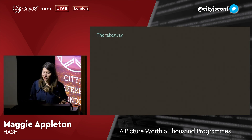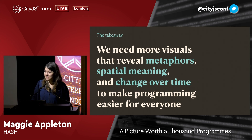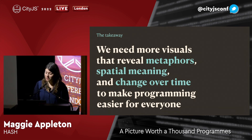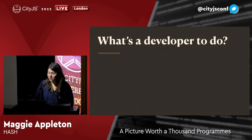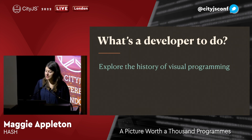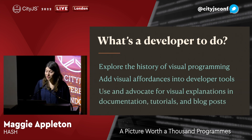So to wrap this up, here's what I want you to take away from this talk: we need more visuals that reveal metaphors, spatial meaning, and change over time to make programming easier for everyone. It will make it easier for you as an embodied human who needs to learn complex abstract programming ideas to do your job well. It makes it easier for all the people who don't currently know how to program but are trying to learn, and it makes it easier for people who aren't developers but who need to understand what we do, like product managers and designers who can't read all the jargon in our text-heavy documentation. So what can you, a humble but skilled JavaScript developer, do to advance that goal? First, explore the history of visual programming and some of the past attempts in that field — there's a lot of previous art to learn from. If you are a creator of tools for other developers, consider ways to build visual affordances into your libraries, plugins, apps, or frameworks. And finally, use and advocate for visual explanations in documentation and tutorials — that might mean making them for your own blog posts or collaborating with designers on larger projects.